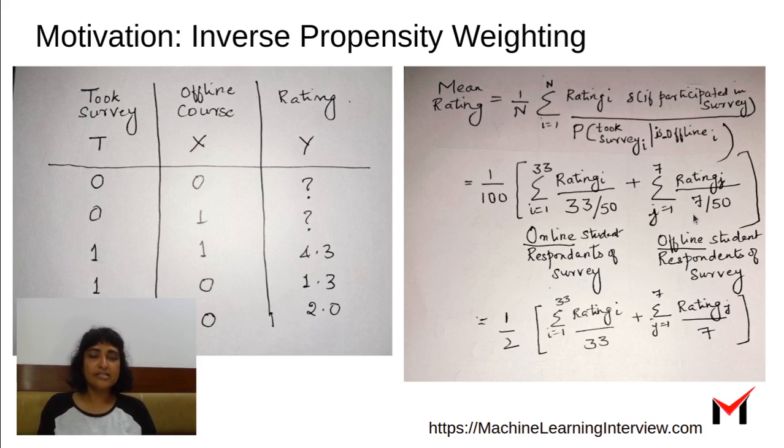So what we did is we divided the rating by a denominator which is smaller in the case of underrepresented group, which is offline in this case. And by dividing with a smaller denominator, we are giving it more weightage. So that's why it's inverse propensity weighing.